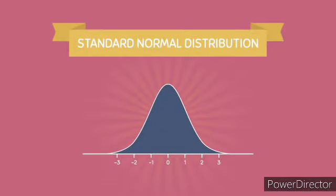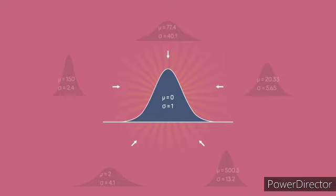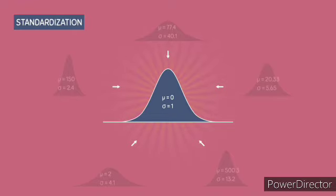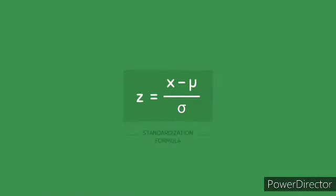The special thing about the standard normal distribution is that any type of normal distribution can be transformed into it. Any normal distribution with any value of mu and sigma can be transformed into the standard normal distribution, where you have a mean of 0 and standard deviation of 1. This conversion process is called standardization, and it allows us to use the z-score table to calculate exact areas for any normally distributed population.